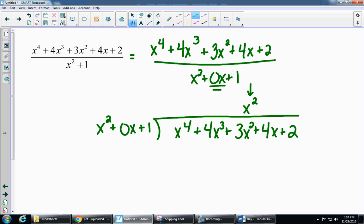As soon as you get that top piece, you're going to multiply. x to the second times x to the second gives me x to the fourth. x to the second times 0x is 0x to the third. Remember, anything times 0 is always going to be 0, regardless of what the variable is. x squared times 1 gives me x squared.